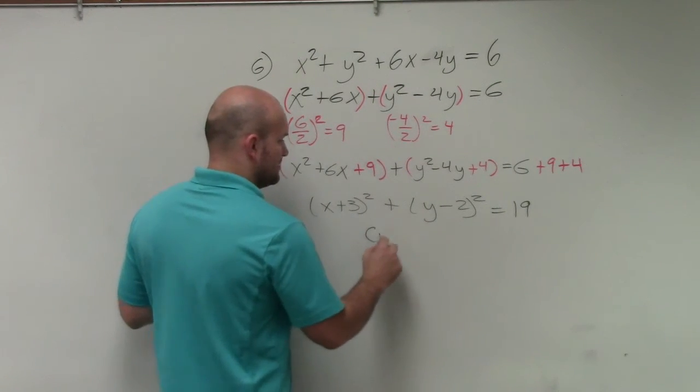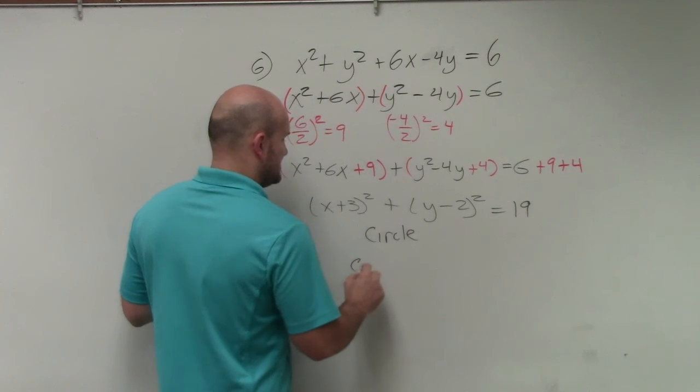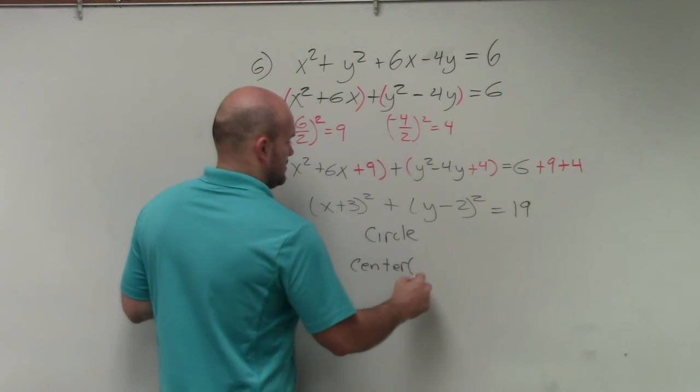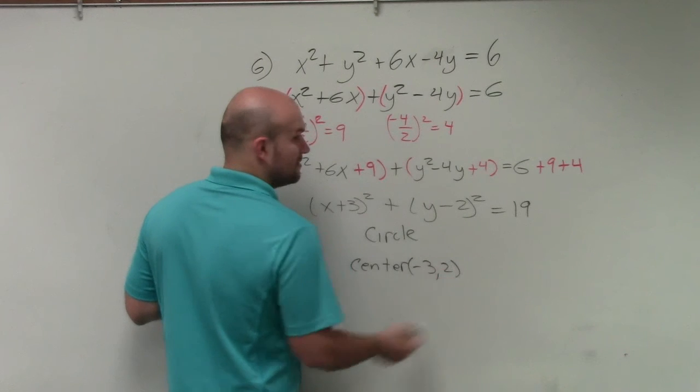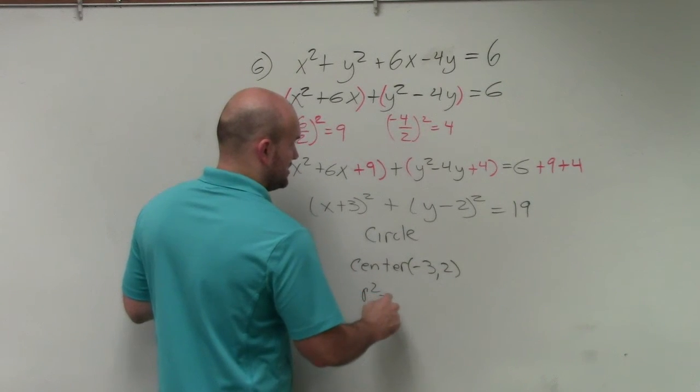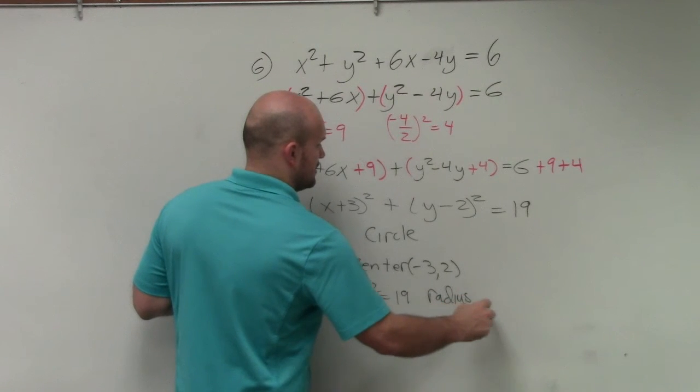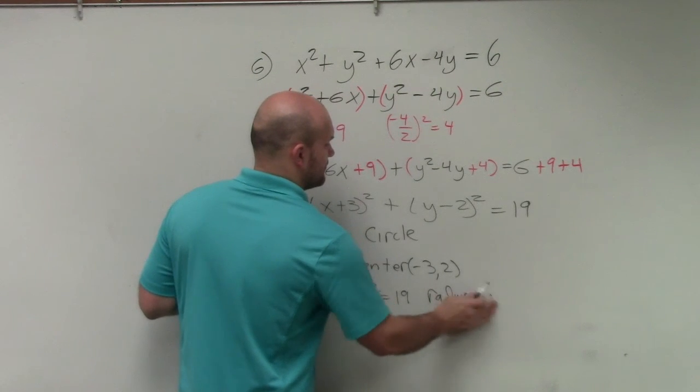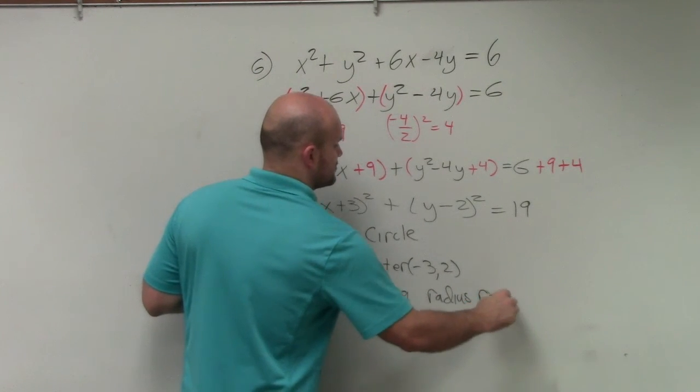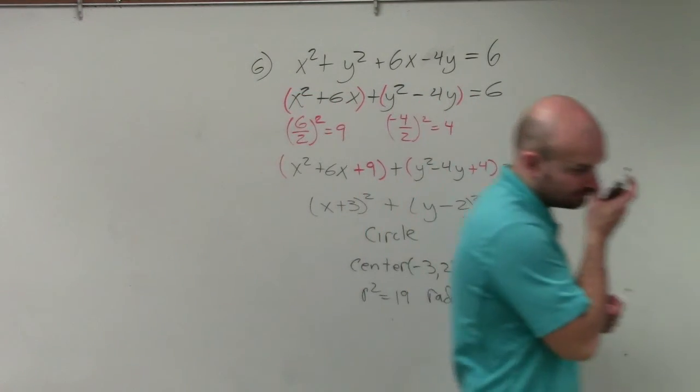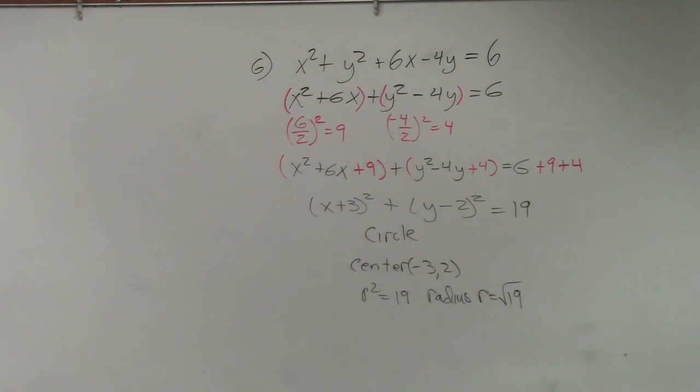We can still find the center. So the center is negative 3 comma 2. R squared is equal to 19. So that means the radius is r equals the square root of 19.